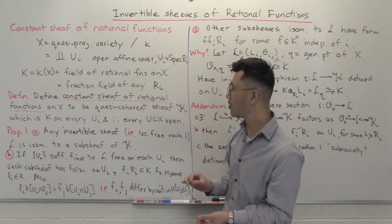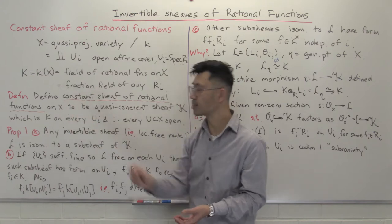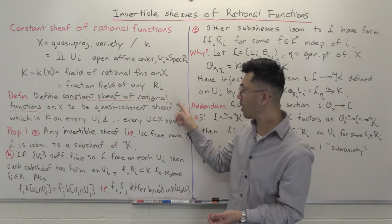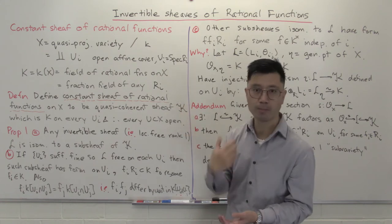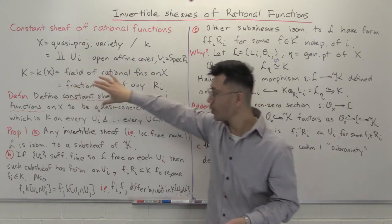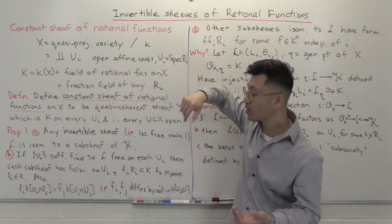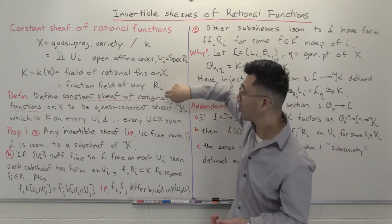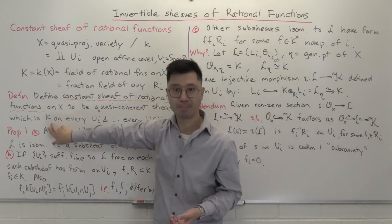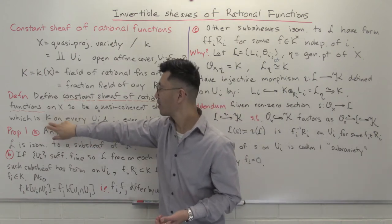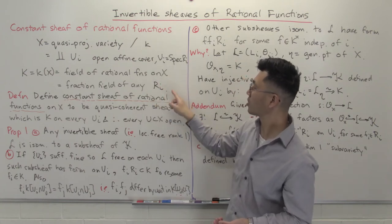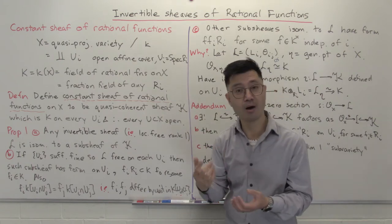Let's come to the definition of the constant sheaf of rational functions on X. This is going to be a quasi-coherent sheaf, given by this calligraphic K. We'll do it in terms of descent data — what this quasi-coherent sheaf is. I have to give you an R_i module on each U_i. That R_i module is just going to be k, the field of fractions. So this k is indeed just the field of fractions of R_i, and in particular it's an R_i module.